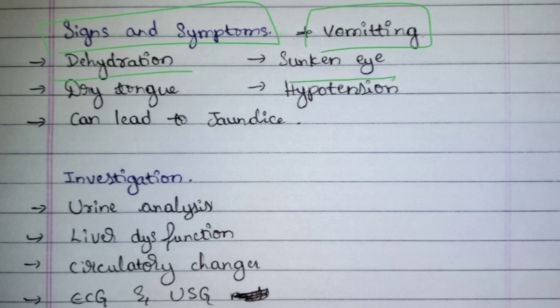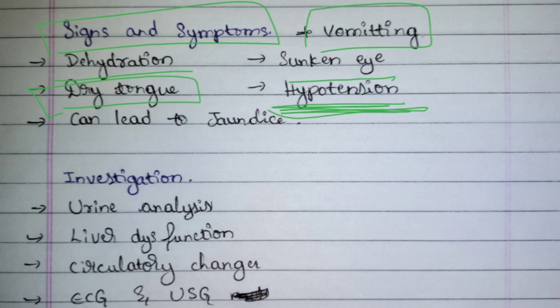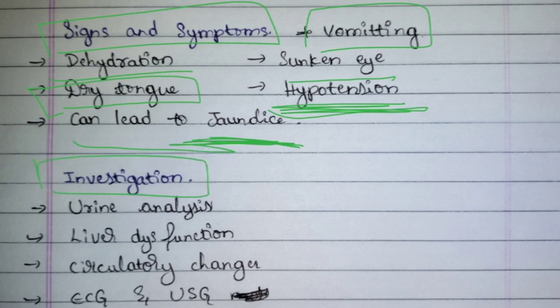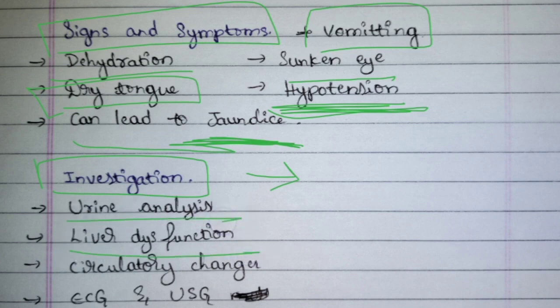Signs and symptoms of hyperemesis gravidarum: definitely vomiting, but apart from this we have dehydration — sunken eyes, dry tongue, hypotension due to excess discharge of electrolytes, and if this condition lasts it may lead to jaundice. For investigation, we take the patient's previous history, physical examination, blood examination, urine analysis, liver function test, vital signs, ECG, and USG.